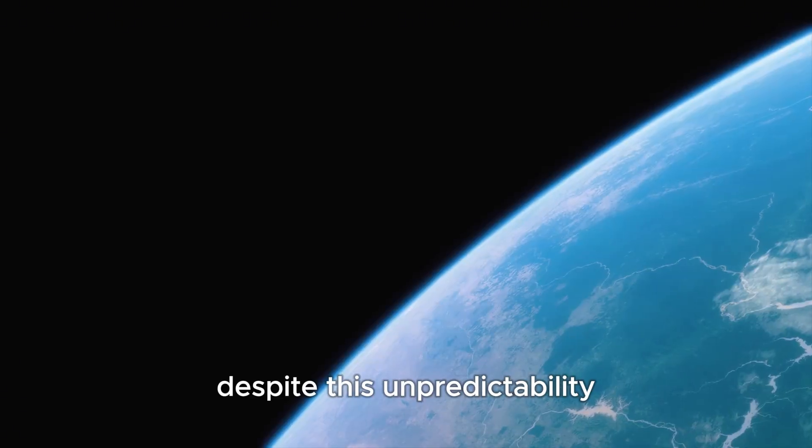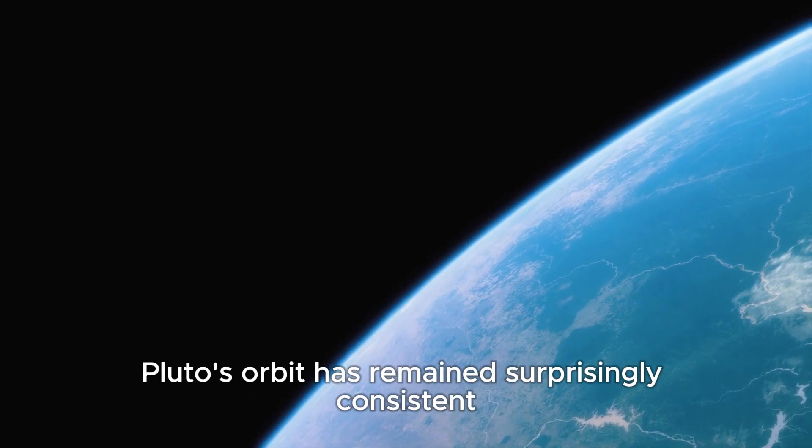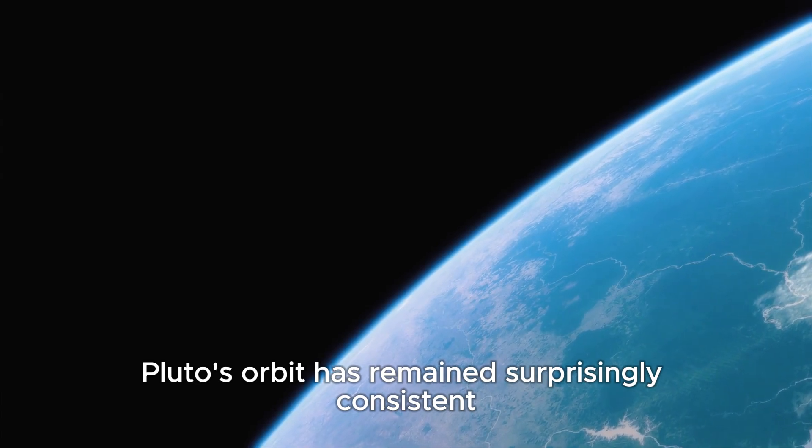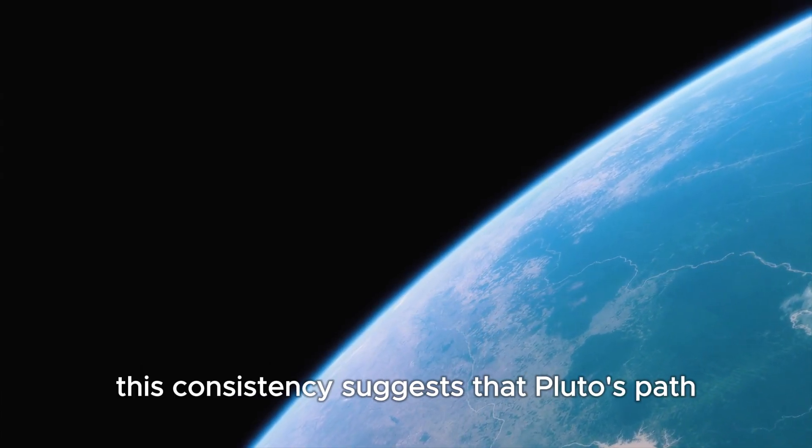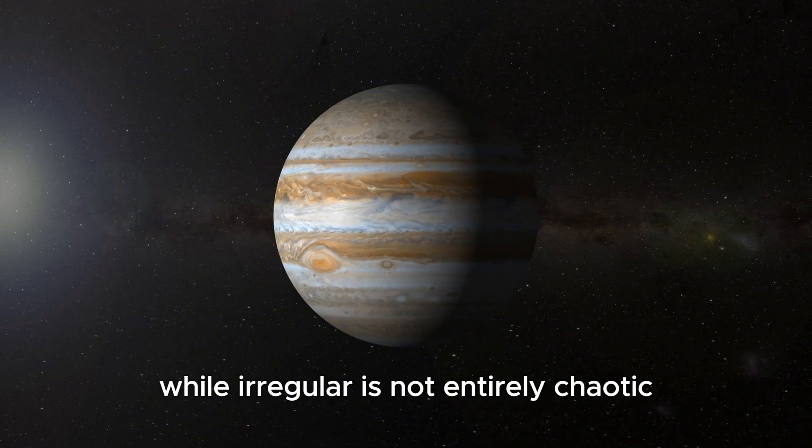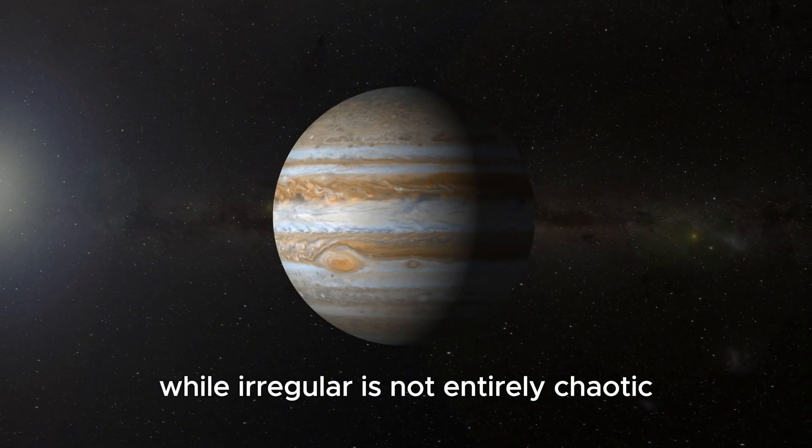However, despite this unpredictability, Pluto's orbit has remained surprisingly consistent over billions of years. This consistency suggests that Pluto's path, while irregular, is not entirely chaotic.